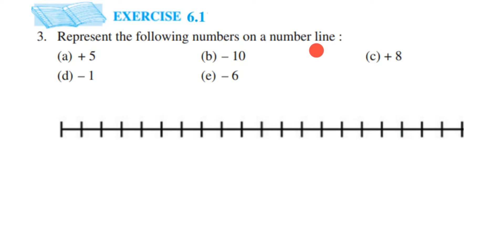The first number here is plus 5. I'm going to represent everything on one single number line. At the center we have zero — you can place zero anywhere. I'm just assuming this point is my zero.